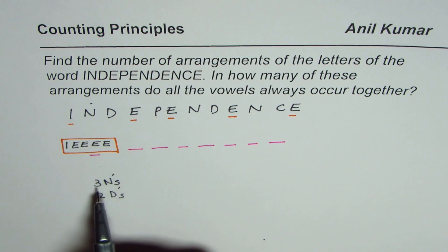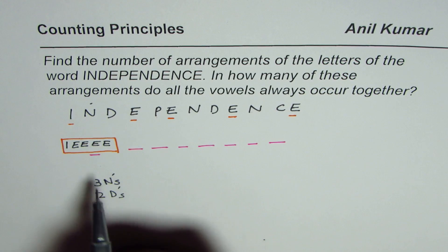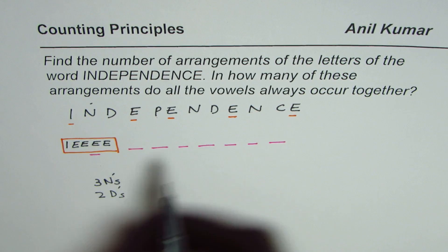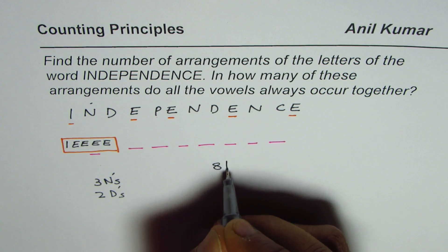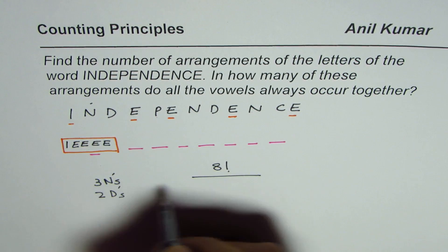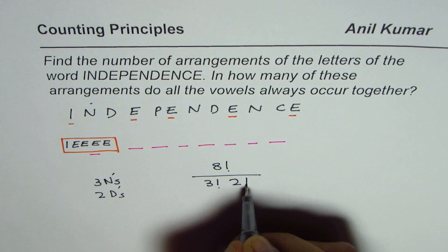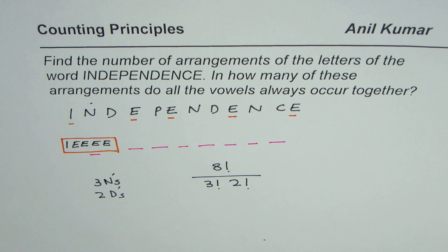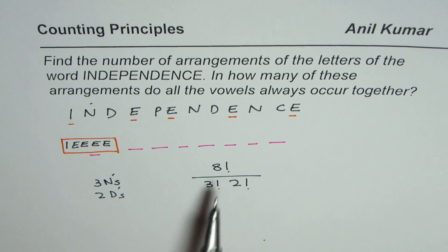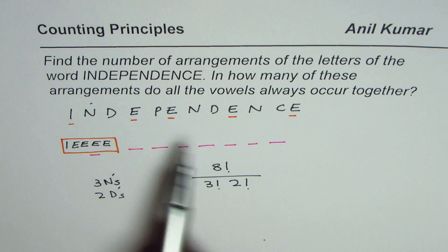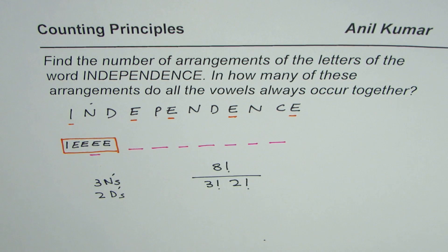And therefore, since these are repeated, the count should be eight factorial divided by three factorial times two factorial. So whenever you're doing permutations where some are identical, in this case three N's and two D's, we have to divide by them since our number of selections become lesser by that factor.